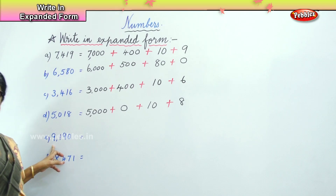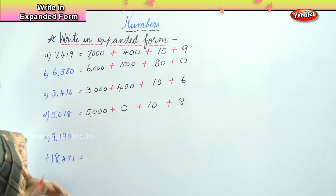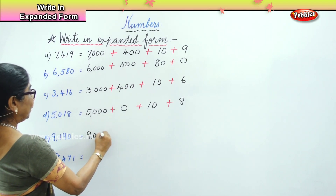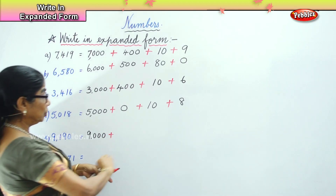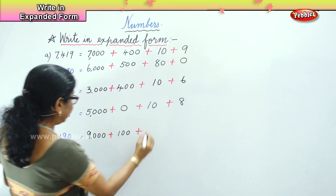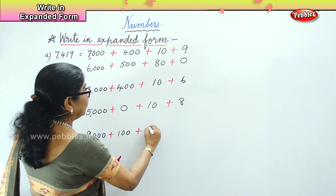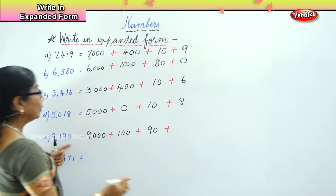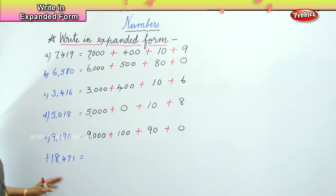Next one: 9,1,9,0. So what will you write? Nine thousand, plus one hundred, plus ninety, plus zero.